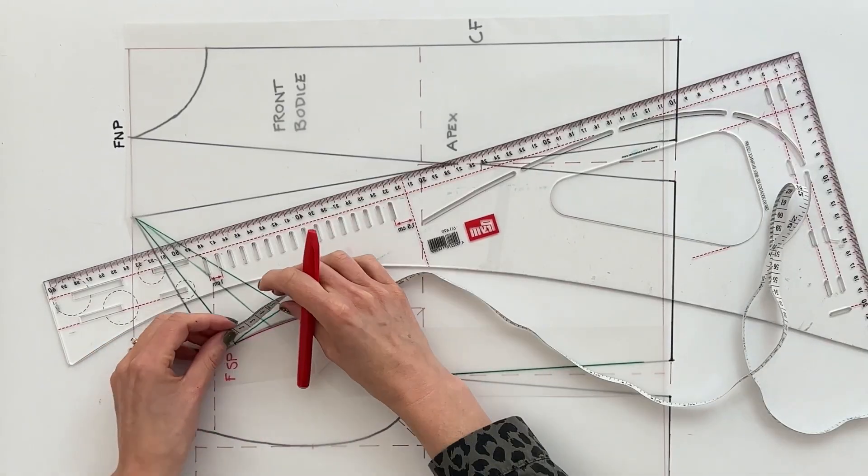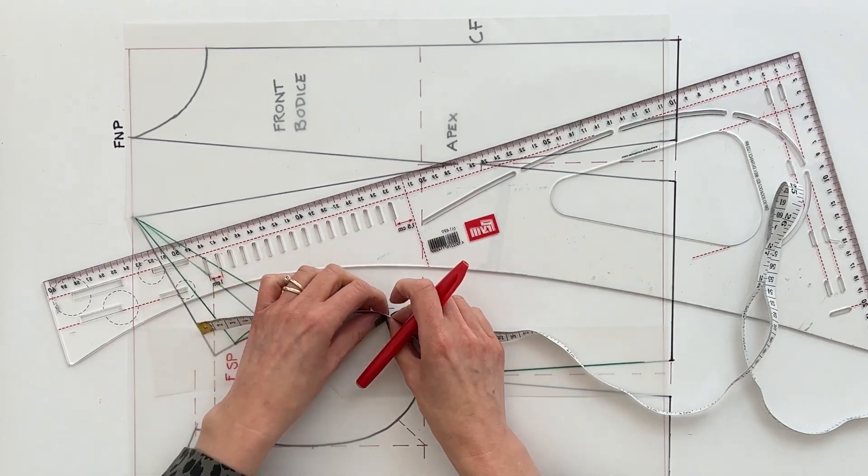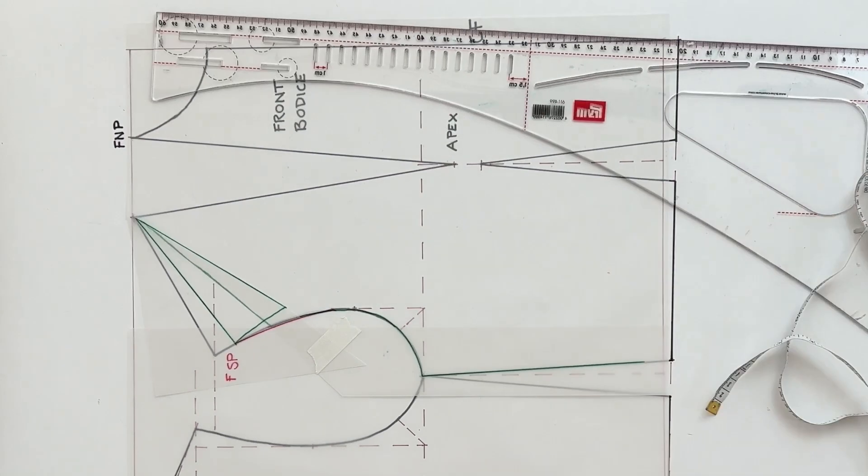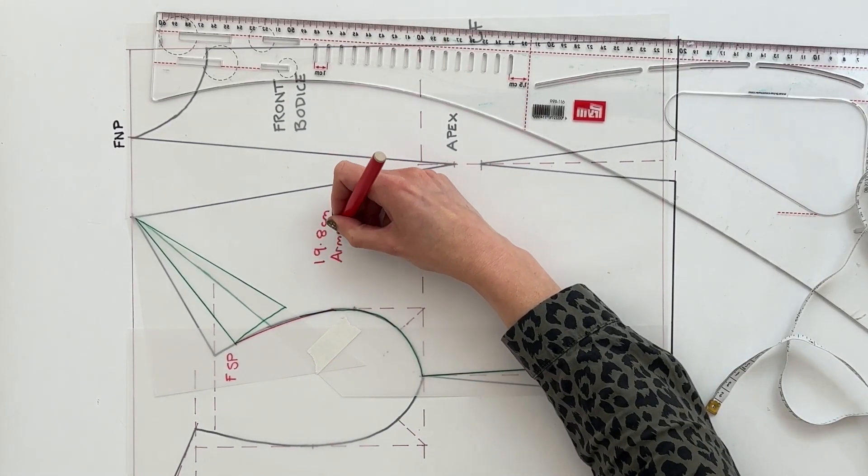So we're then going to measure out what our armscye used to be on our previous block and translate that depth into the new alteration we're about to do. So we're going to measure the armscye along our green lines. Go back to your original block if you want.